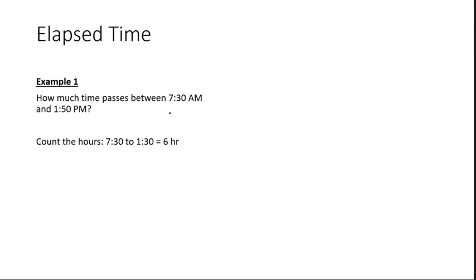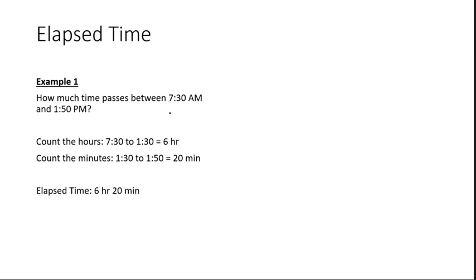So it takes six hours to get to 1:30, and then an additional 20 minutes to get from 1:30 to 1:50. If you count the minutes from 1:30 to 1:50, that's 20 minutes. So the total elapsed time would be six hours and 20 minutes.